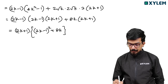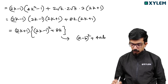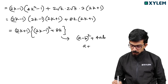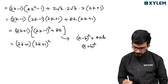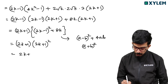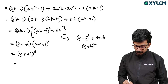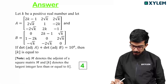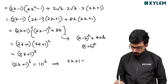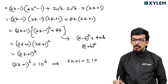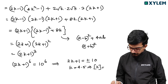The expression 2k minus 1 whole squared plus 8k equals 2k plus 1 whole squared. So the determinant equals 2k plus 1 whole cubed. Then 2k plus 1 whole to the 6th equals 10 to the power 6, so 2k plus 1 equals 10, giving k equals 4.5. The greatest integer of k is 4.